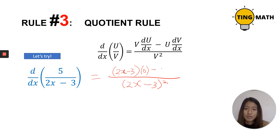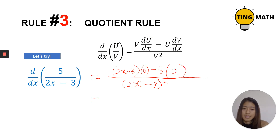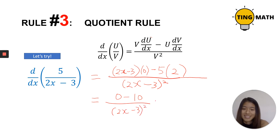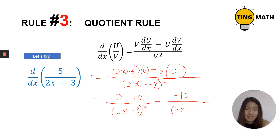U is five — that's the top. Now we differentiate the bottom. The bottom is 2x minus 3, and when we differentiate it, it becomes 2. Anything multiplied by zero is zero, and 5 times 2 is 10. So when we simplify, we get negative 10 over (2x minus 3) squared. We're done with this quotient rule example.